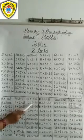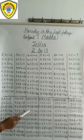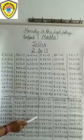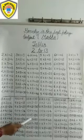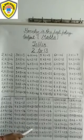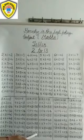10 1s are 10. 10 2s are 20. 10 3s are 30. 10 4s are 40. 10 5s are 50. 10 6s are 60. 10 7s are 70. 10 8s are 80. 10 9s are 90. 10 10s are 100.